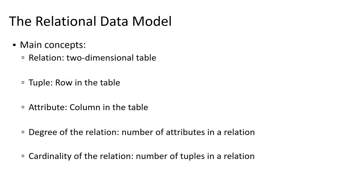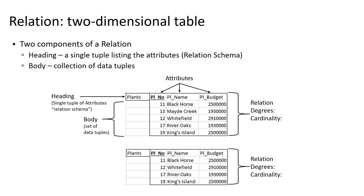In our relational data model, relations are two-dimensional tables, tuples are rows in the tables, and attributes are columns in the tables. The degree of a relation is the number of attributes in the relation, and the cardinality of the relation is the number of tuples in the relation. Relations are made up of two components: the heading, which is a single tuple at the top listing the attributes (also called the relation schema), and the body, which is the collection of tuples making up all the data. For example, a relation with three attributes has a degree of three, and with five tuples has a cardinality of five.